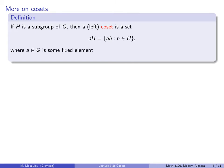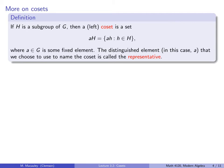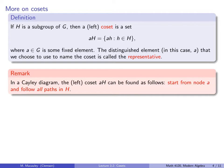Here is the formal definition. If H is a subgroup of G, then a left coset is a set of the following form: we denote it as a fixed element A in G times the subgroup, and that is the set of all products of that fixed element times something in the subgroup. The distinguished element A that we choose to name the coset is called the representative. In a Cayley diagram, the left coset AH can be found by starting from the node A and following all paths in H.